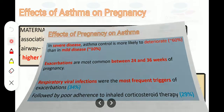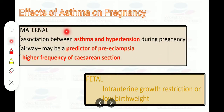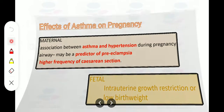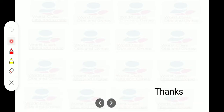Effects of asthma on pregnancy — maternal: there is an association between asthma and hypertension during pregnancy; airway inflammation may be a predictor of preeclampsia; and there is a higher frequency of cesarean section. Fetal effects include intrauterine growth restriction and low birth weight. That concludes this overview of the TOGS article on asthma in pregnancy.